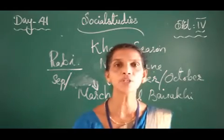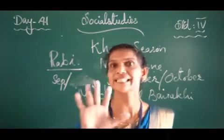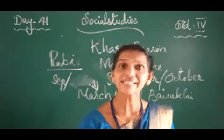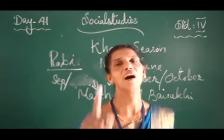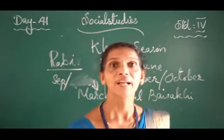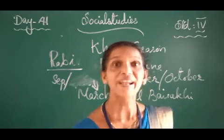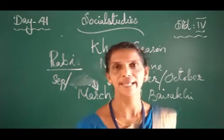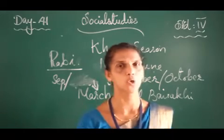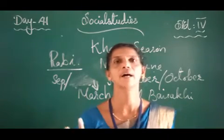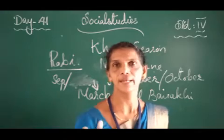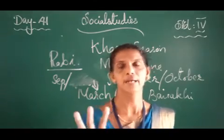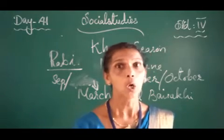Children, what did we study today? We were studying about the two main agricultural seasons in India — which are Kharif and Rabi. Kharif season starts with the onset of the South West monsoon in May and June, and it is harvested in September or October.